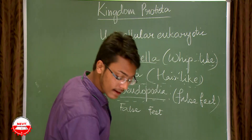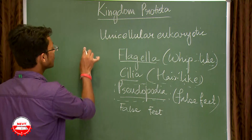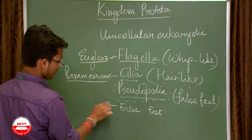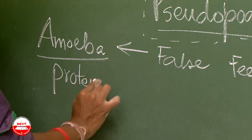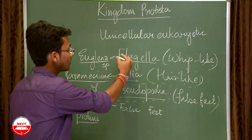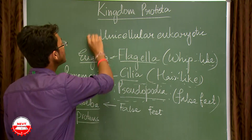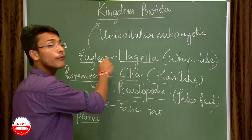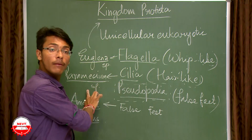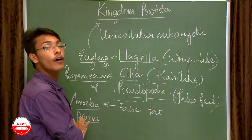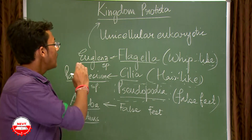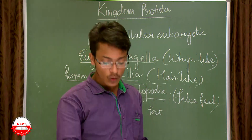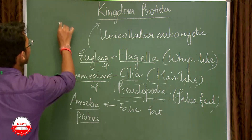Examples of these structures in Kingdom Protista: flagella are found in Euglena, cilia are found in Paramecium, and pseudopodia are found in Amoeba. Euglena deserves a special mention — it is said to be the bridge between the plant and animal kingdoms.